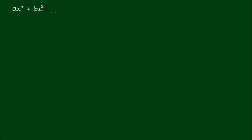In this video, we are going to explore the roots of a fourth-order polynomial and their relationship to its coefficients. So let's start off with an arbitrary fourth-order polynomial: ax to the fourth plus bx cubed plus cx squared plus dx plus e is equal to zero. I'm going to rewrite this equation by dividing through by a.